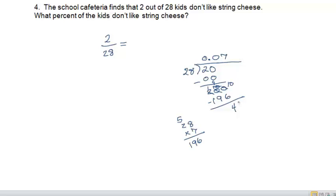What I do is I add another 0 and I can already see that 28 goes into 40 only once. So that gives me my answer. My final answer is going to remain 7%. So 7% of students don't like string cheese.